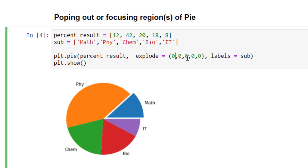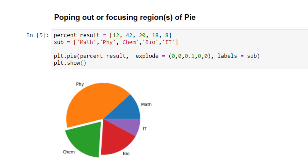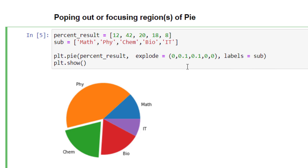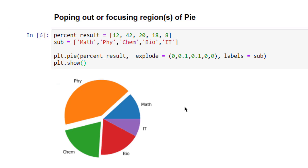Once I run it, you can see the chemistry portion got popped out. So this is just a focus region in case you wanted to highlight a particular region. These are the features that you can use, and you can also pop out two at a time. Let's say I'll pop out physics also — the second one — with 0.1, and then execute it. So both the portions got popped out. The name of the function is explode but actually it is popping out.